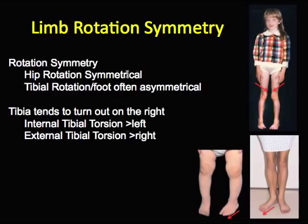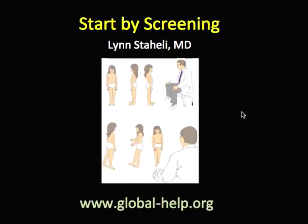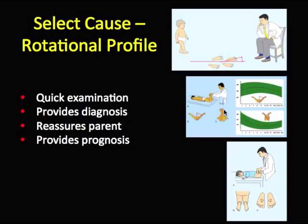Rotation and symmetry differ across parts of the extremity. Hip rotation is nearly always symmetrical, whereas the tibia is often asymmetrical — probably because internal tibial torsion may be due to intrauterine position. We start with a screening examination to make sure there are no other problems present.